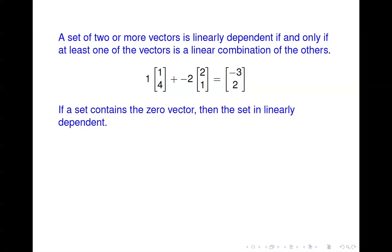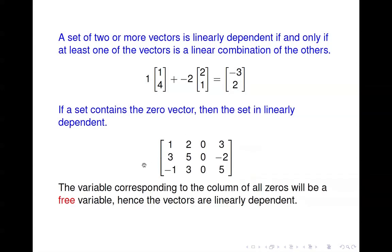Here's another rule to keep in mind: if a set contains the zero vector, then that set is linearly dependent. The variable corresponding to the zero vector is always going to be free, and hence any set containing the zero vector is linearly dependent.